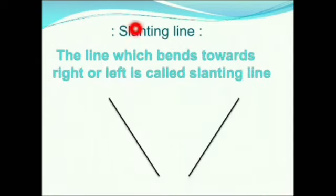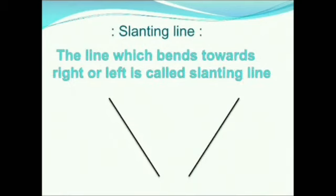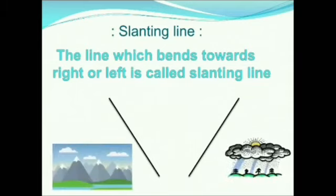Next, we will move to slanting line. The line which bends towards the right or left is called a slanting line. They look like a slope. You have seen rain, right? The raindrops will be in the form of slanting lines. And mountains will also look like they have slanting lines at the edges.